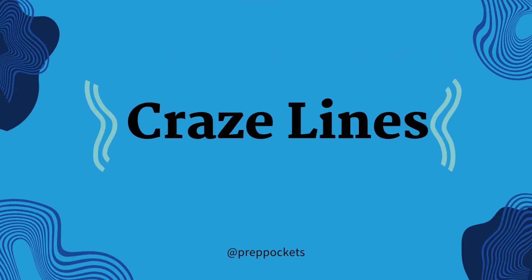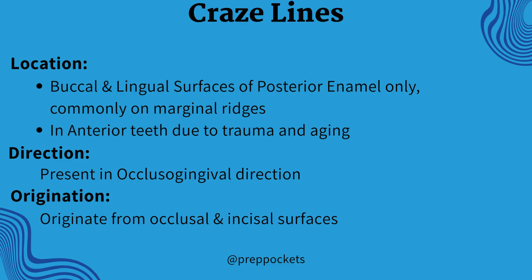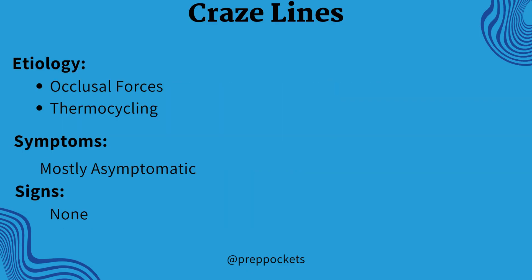Let's begin with the harmless craze lines. Craze lines are micro cracks confined to the enamel of permanent teeth. Located most commonly in anterior teeth and marginal ridges of posterior teeth, originating from occlusal and incisal surfaces in the occlusogingival direction. These are mostly asymptomatic, having no signs and symptoms, but occurring from high occlusal forces and thermal changes, which is also called thermocycling.